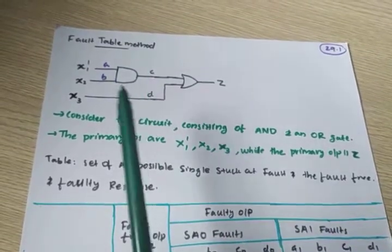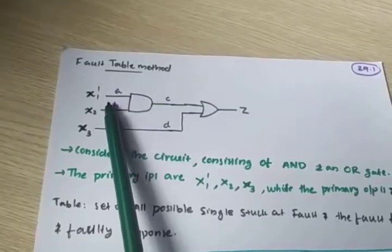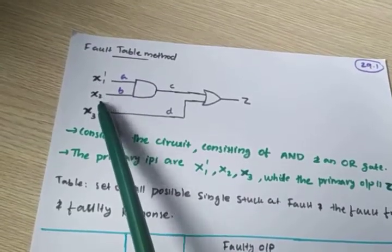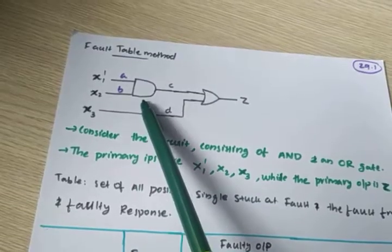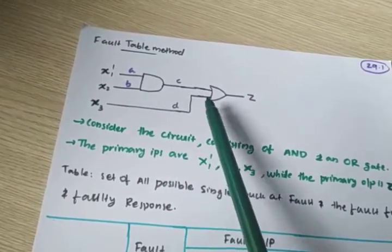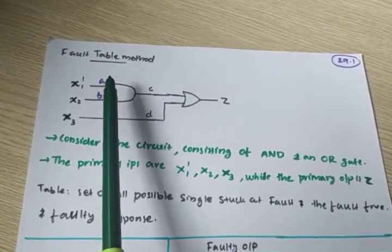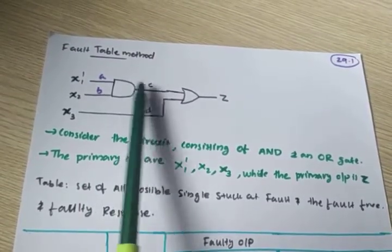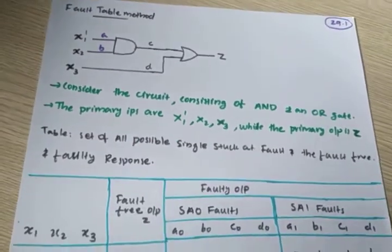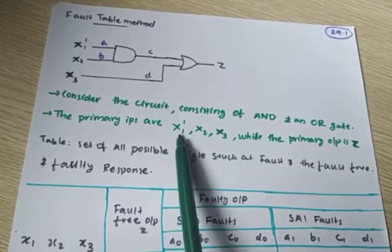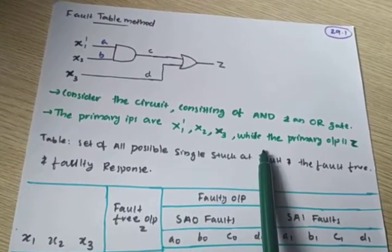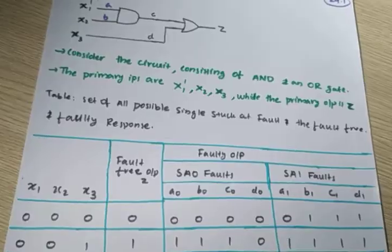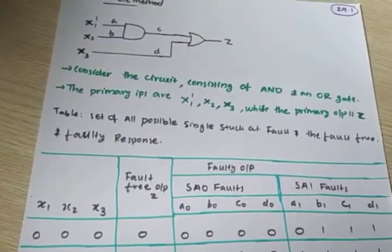First, draw the circuit. This is x1 dash — x1 dash means x1 bar. So x1 bar, x2, x3, x1 — x2 is given to the AND gate, output of AND gate and x3 is given to the OR gate, and this is the final output. AB represent the inputs x1 bar and x2. C is the output of the AND gate and D is x3. The primary inputs are x1 bar, x2, x3.